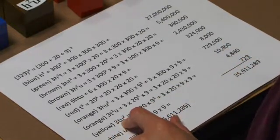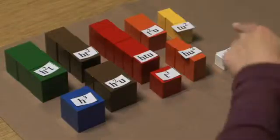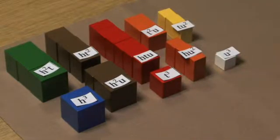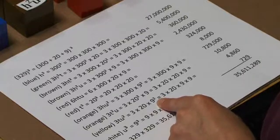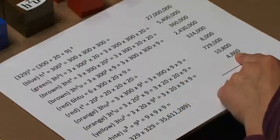Then we have our tens times unit squared. We have 3 of those. We have 3 times 20 times 9 squared or 4,860.